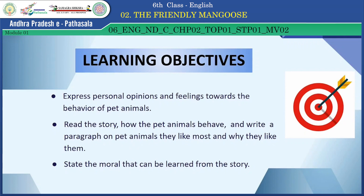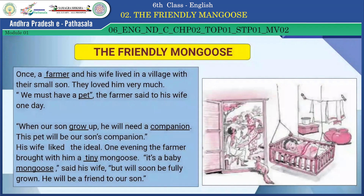Now, children, are you ready to enter into the first part of the activity? Once, a farmer and his wife lived in a village with their small son. They loved him very much. 'We must have a pet,' the farmer said to his wife one day. 'When our son grows up, he will need a companion. This pet will be our son's companion.' His wife liked the idea. One evening, the farmer brought with him a tiny mongoose. 'It is a baby mongoose,' said his wife, 'but will soon be fully grown. He will be a friend to our son.'